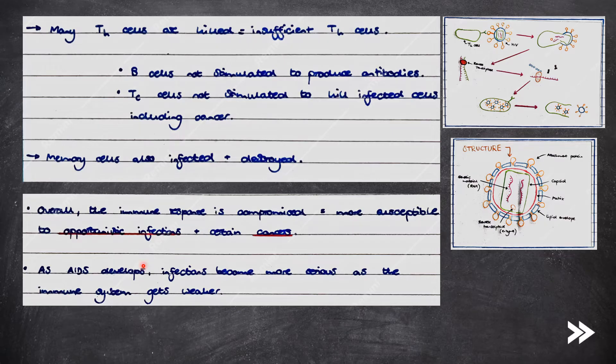Overall, this means that the immune response is greatly compromised, making the body more susceptible to opportunistic infections and certain cancers. As AIDS develops, infections become more serious as the immune system becomes weaker and weaker.